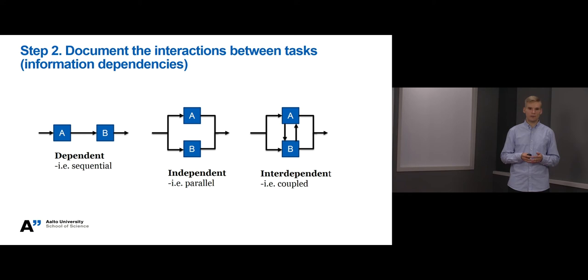In the second example in the middle, task A and task B are independent of each other, meaning that they can be executed in parallel, that is at the same time. In the last and third example on the right, tasks A and B are interdependent on each other, meaning that they both require information from each other. These tasks are called coupled tasks that should be completed at the same time in close collaboration.